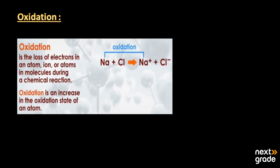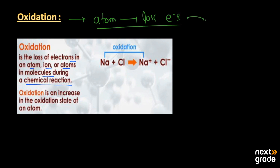The first concept is oxidation in terms of loss or gain of electrons. By definition, oxidation is the loss of electrons by an atom, ion, or atoms in a molecule during a chemical reaction. If atoms or molecules lose electrons in a chemical reaction, they undergo oxidation. So simply, the process of loss of electrons by atoms of an element in any chemical reaction is known as oxidation.